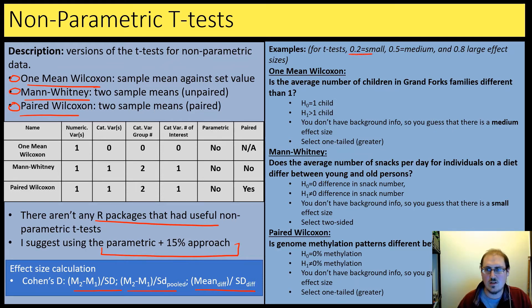Again, reminding ourselves that for t-tests, these are the effect size because we're going to just essentially give guesses for these first ones here. For the first question we're asking is the average number of children in Grand Forks families is different than one. So the null is that there's only one child. That's that set value. Our alternative is there's greater than one.